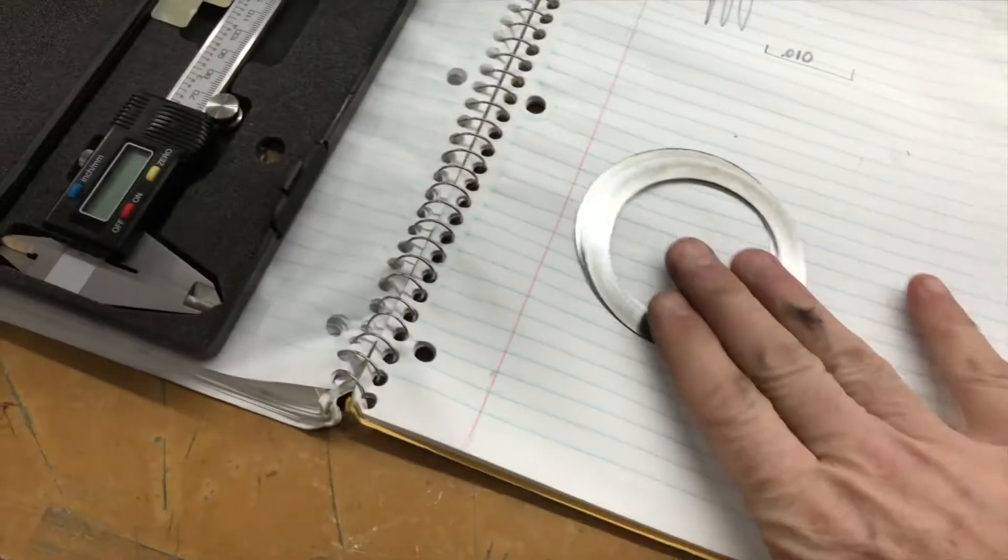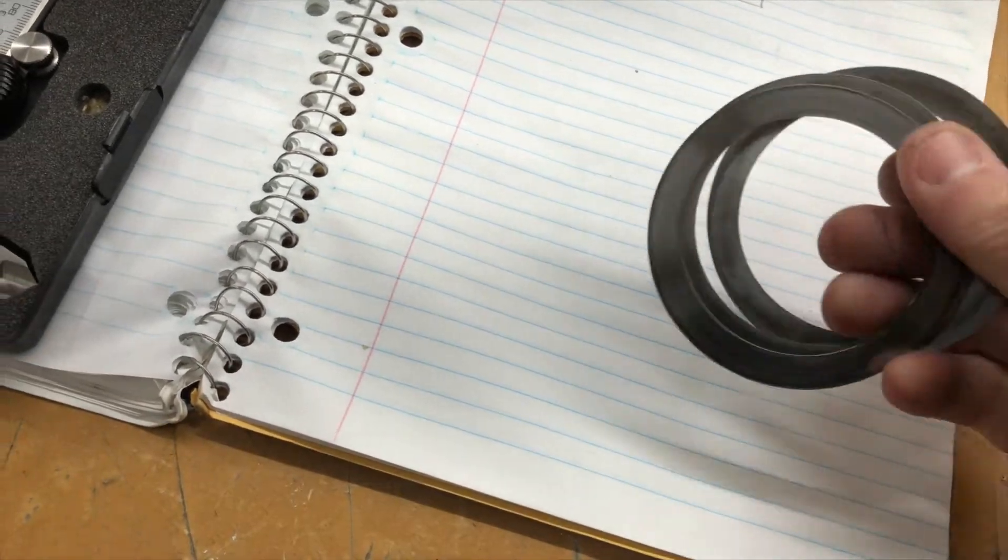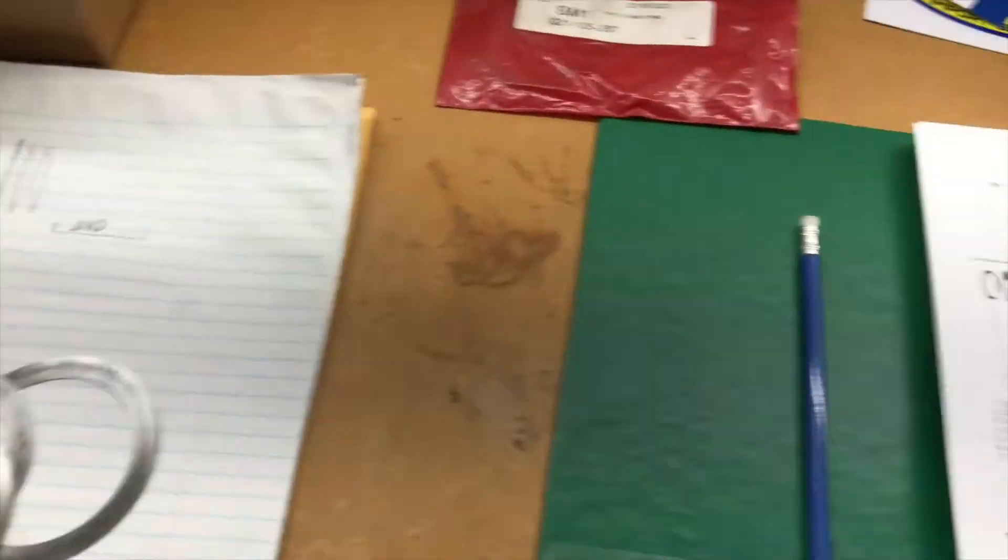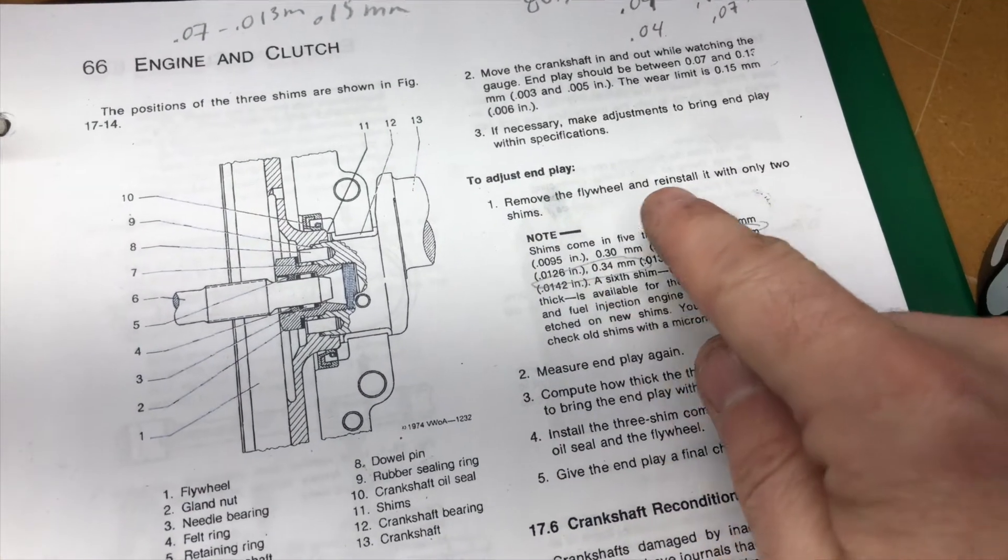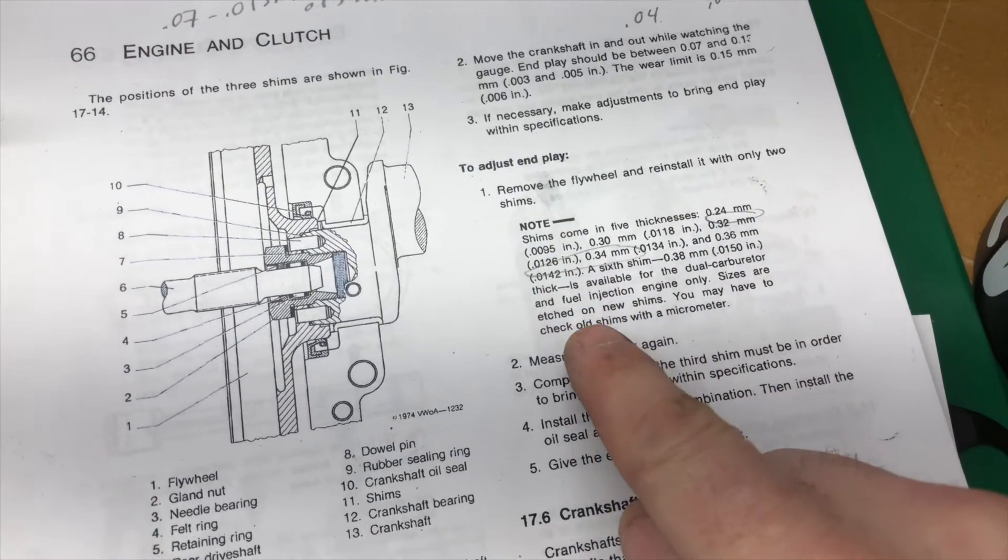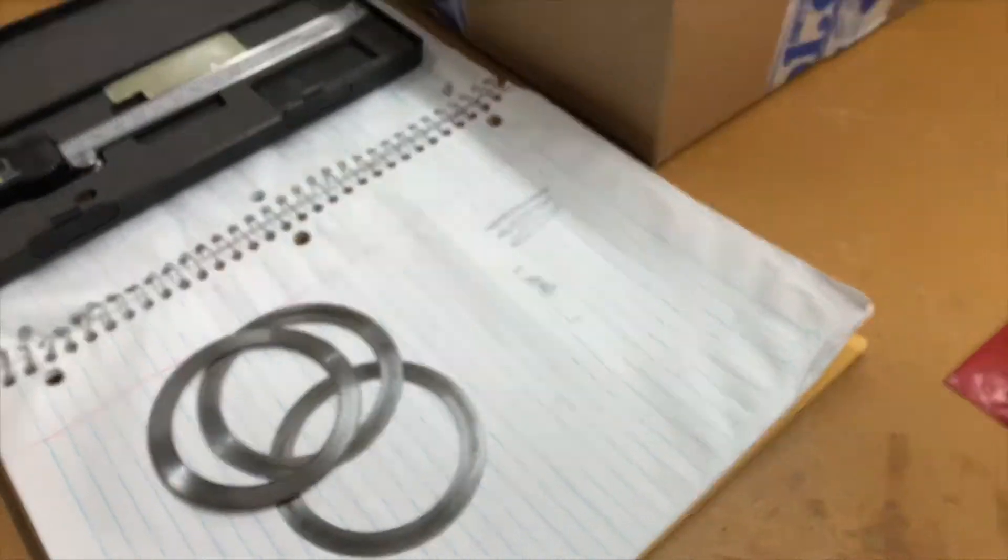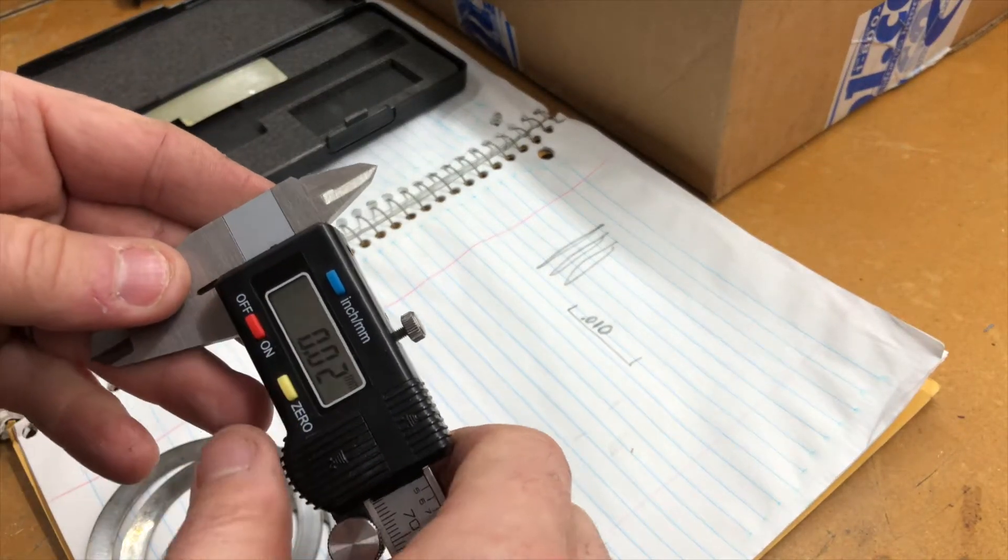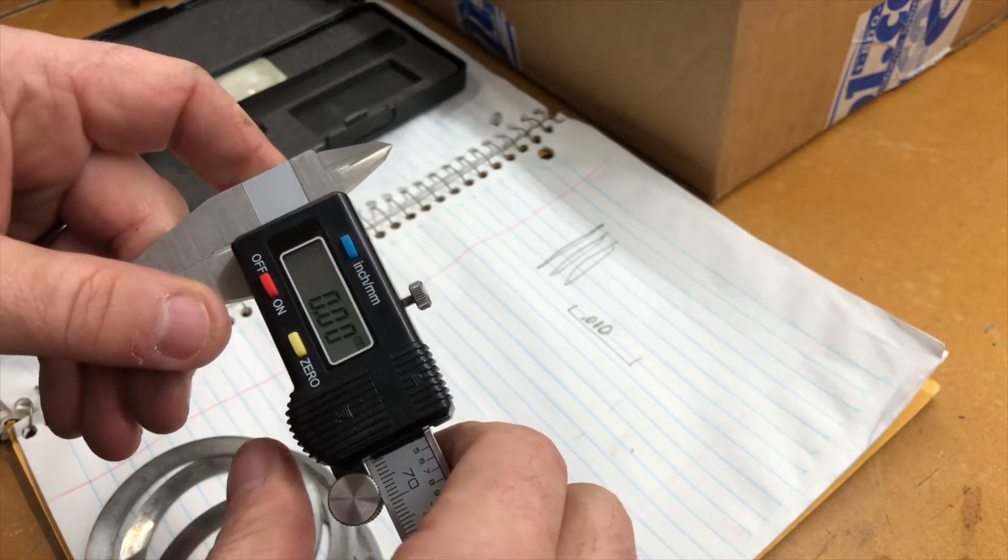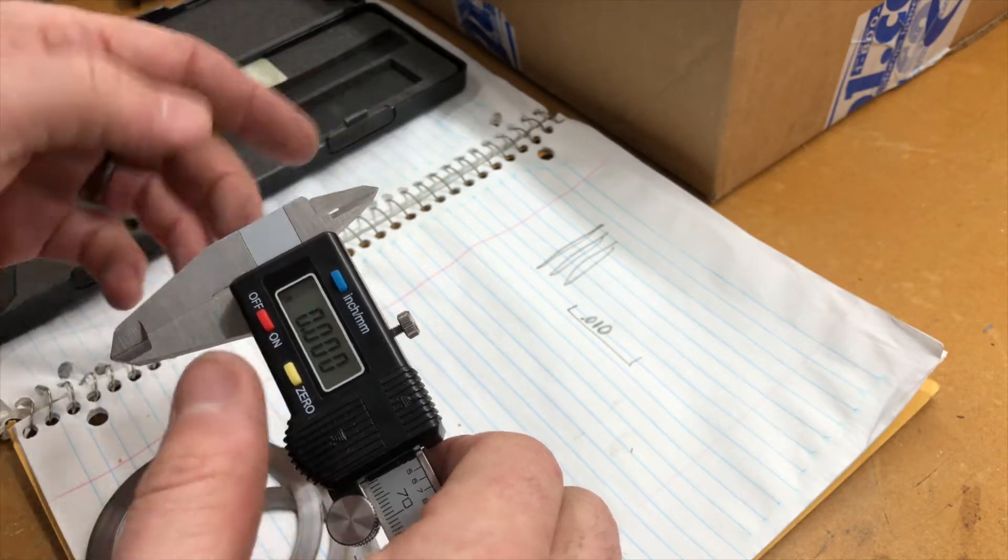Okay, so there's three shims that go behind the flywheel and what's important is that we're going to figure out how thick those are. If you look in the Bentley it's going to tell you how to adjust it, remove the flywheel and reinstall it with only two shims and follow some steps to do some math. Well we don't necessarily need to do that.